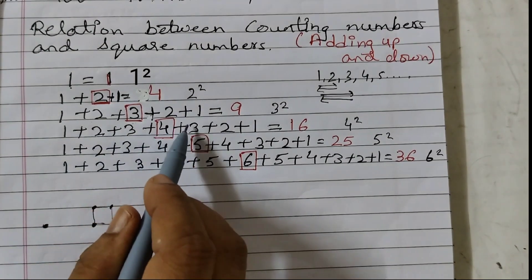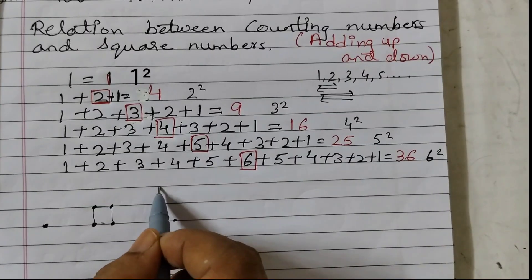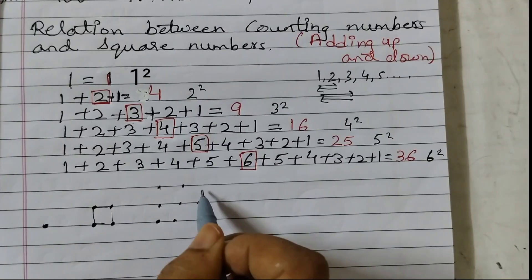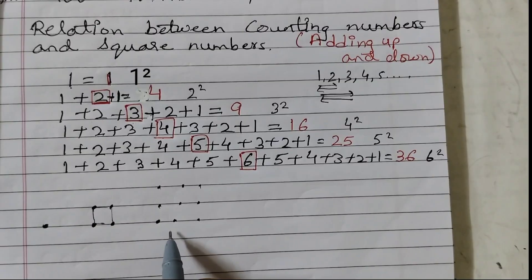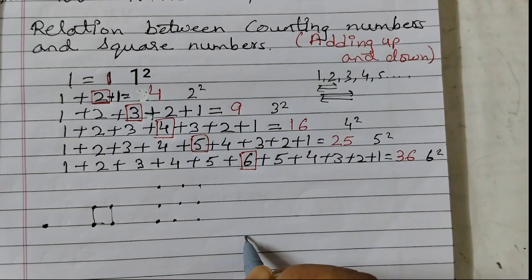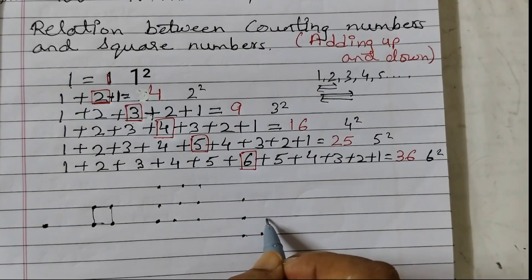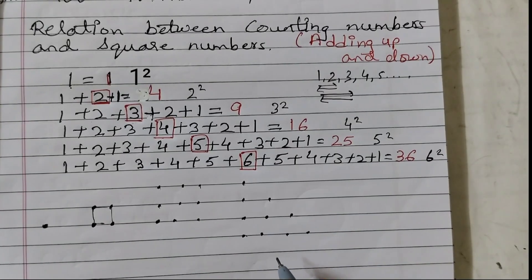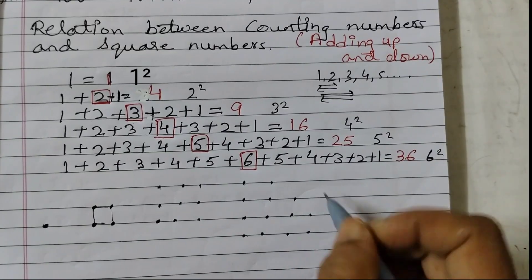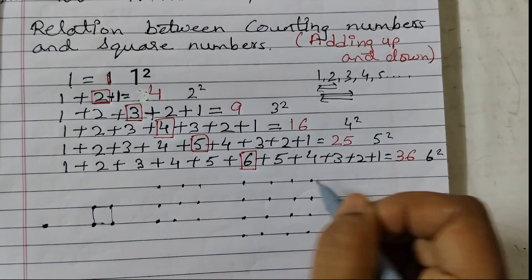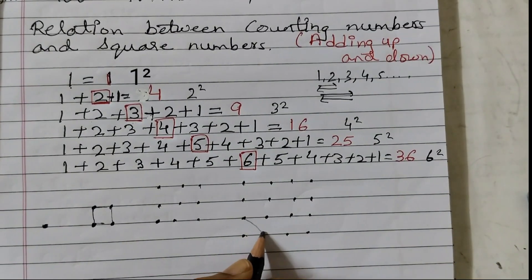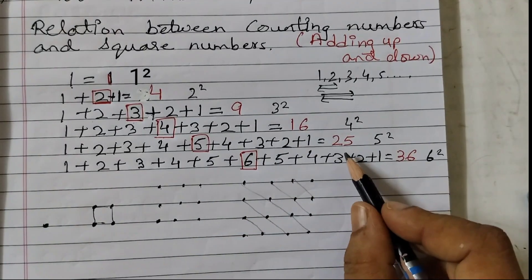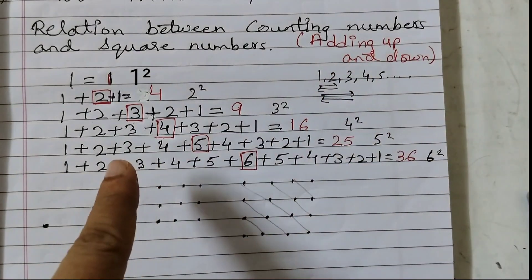Next one is 1 plus 2 plus 3 plus 2 plus 1. So 1, 2, 3 dots diagonally, and then backwards: 2 and 1. Again you see a square pattern is formed — 3 by 3. Similarly you can do for 4: start from 1, then 2 dots, then 3, then 2, then 1 — again a square is formed. So we are adding diagonally like this. Similarly you can do it for 25 and 36. I hope you have understood how adding up and down gives you square numbers.